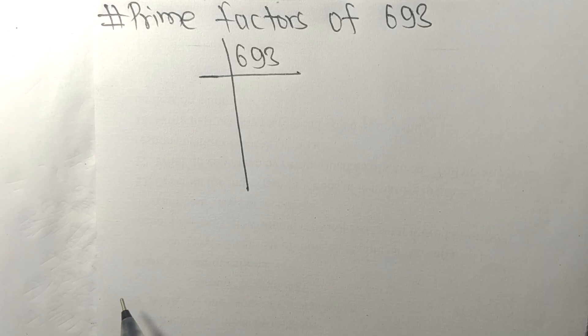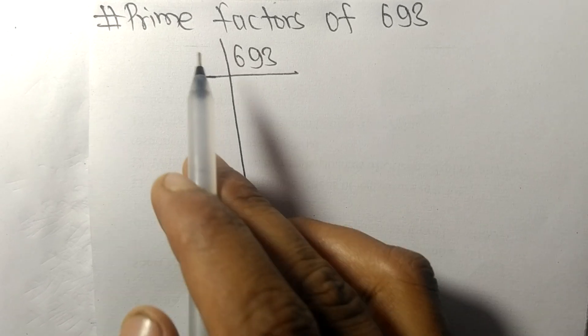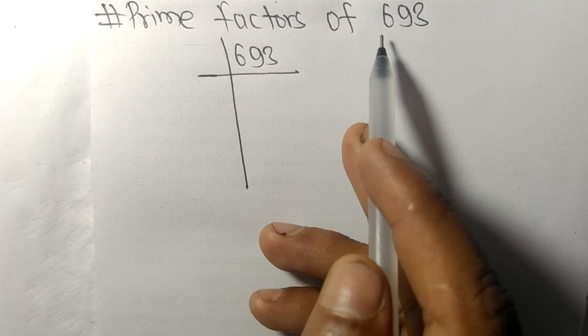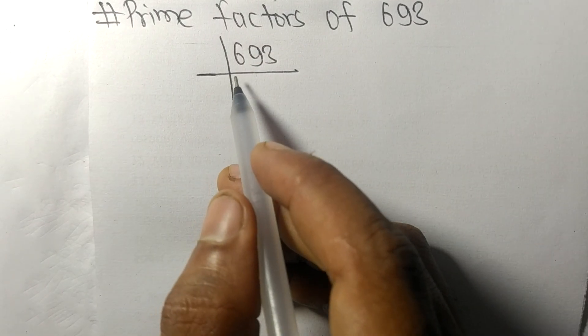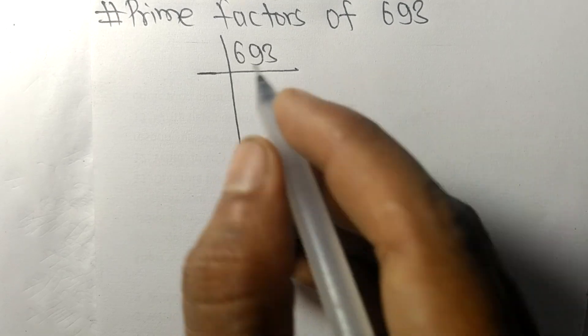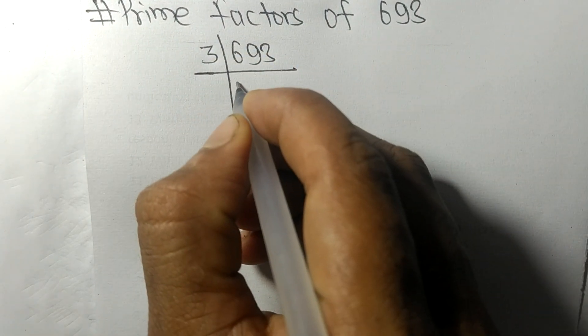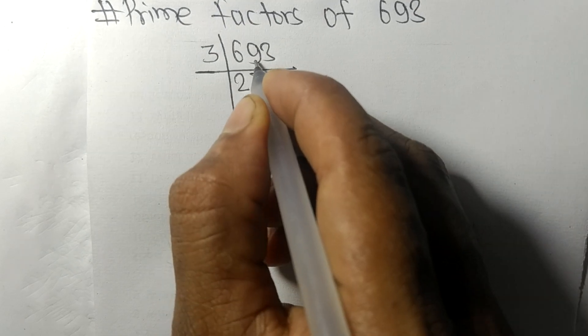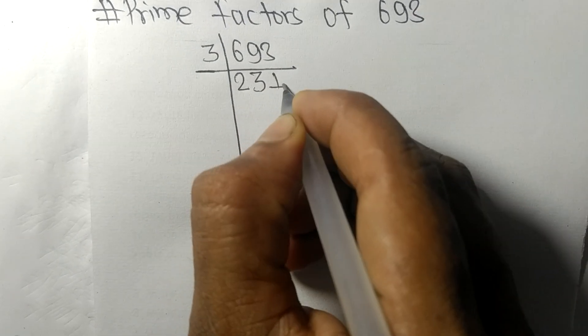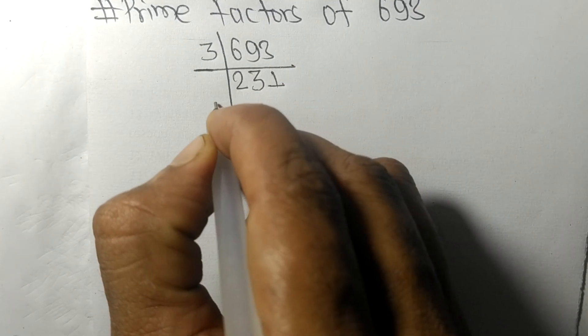So today in this video we shall learn to find the prime factors of 693. 693 is exactly divisible by 3. 3 times 2 is 6, 3 times 3 is 9, and 3 times 1 is 3. So now we get 231.